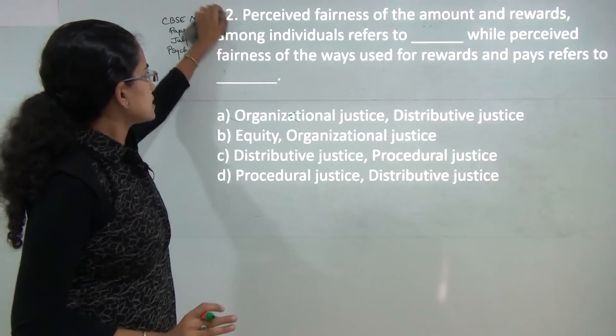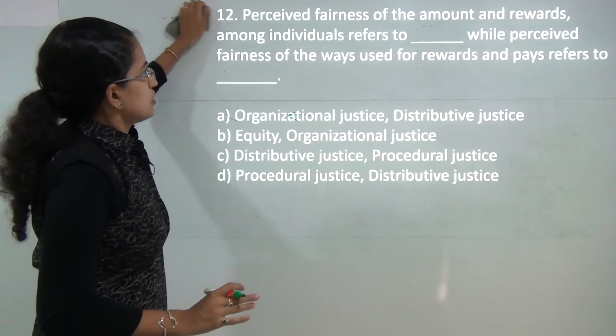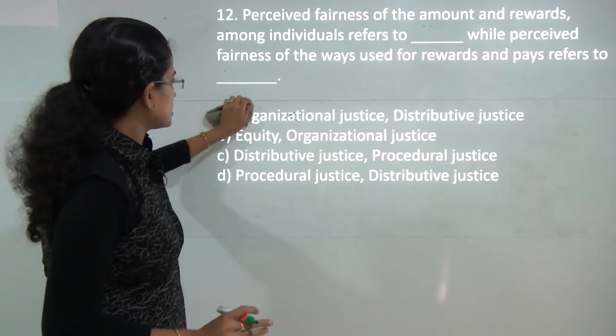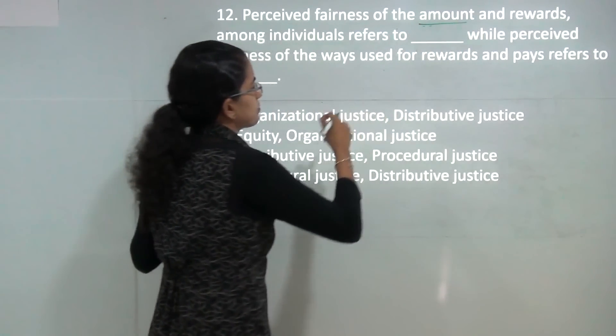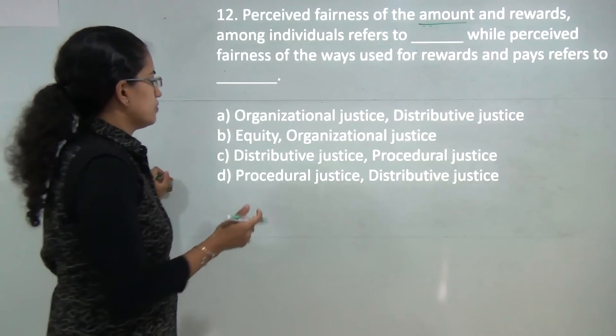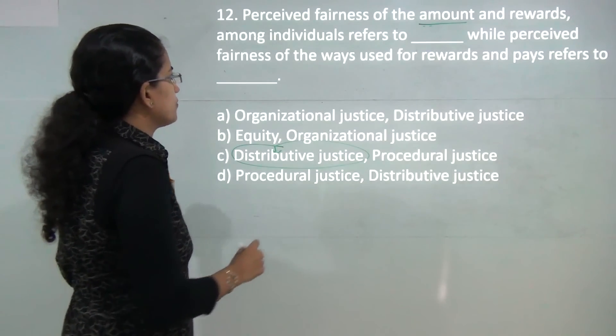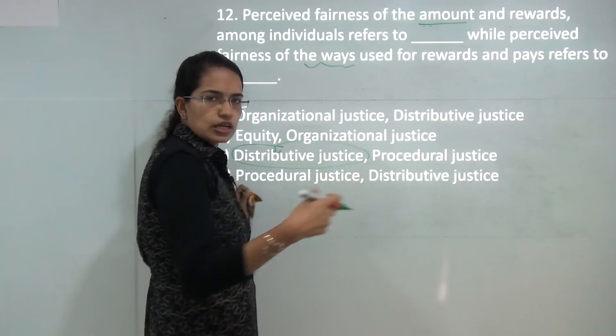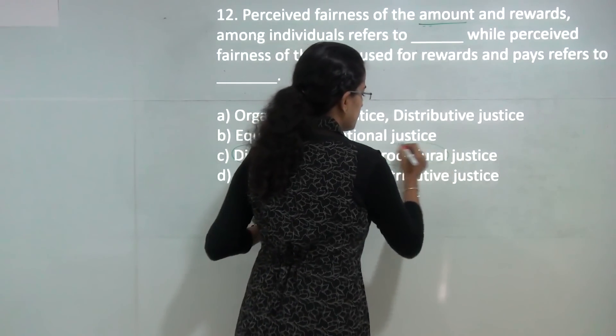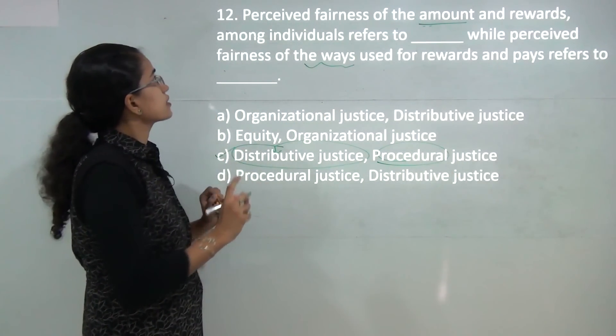Next: this is the concept of justice theory. What is asked is first the fairness of the amount, and when we are talking about the amount we are talking about distributing it, so it's a kind of distributive justice. However, if we are talking about the ways in which we are using it, we are talking about the procedure, so it's a kind of procedural justice. So you have C as the correct option here.